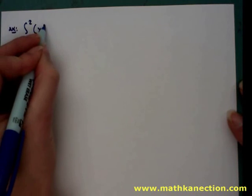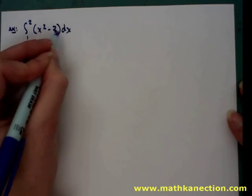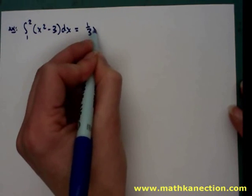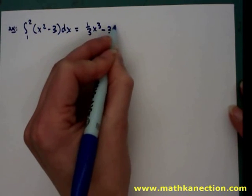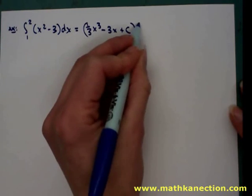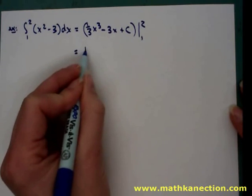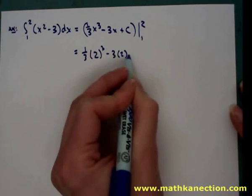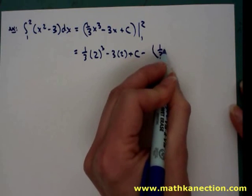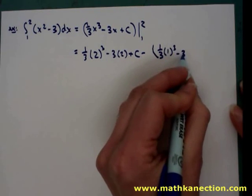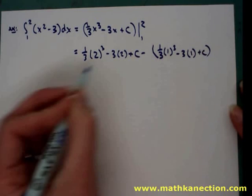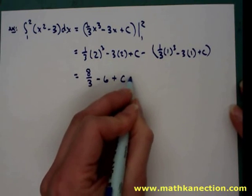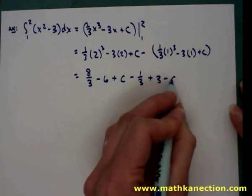In our first example, we're going to evaluate the integral from 1 to 2 of x squared minus 3 dx. The antiderivative is one-third x cubed minus 3x plus c, evaluated from 1 to 2. Substituting in 2 into our antiderivative and then subtracting substituting in 1, we simplify to get eight-thirds minus 6 plus c minus one-third plus 3 minus c.